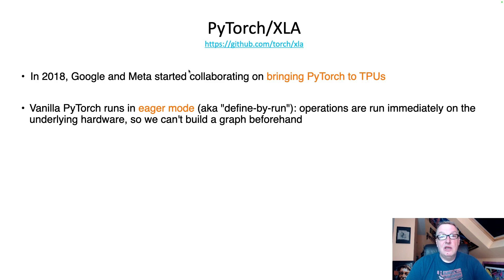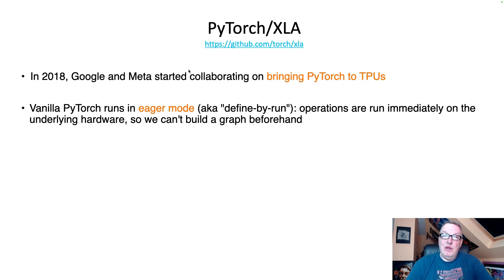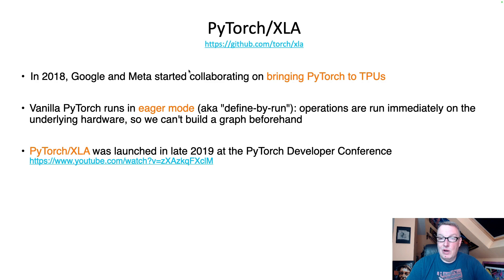So operations run immediately on the underlying hardware — if you run a PyTorch operation, it runs immediately, not later. That means the graph cannot be built beforehand, and if you can't build the graph beforehand, you cannot optimize the graph. That was the whole point of PyTorch XLA, which was launched in late 2019. The launch video is on YouTube — quite interesting. PyTorch XLA introduces the concept of lazy tensors — lazy for lazy evaluation. Lazy tensors allow the graph to be recorded.